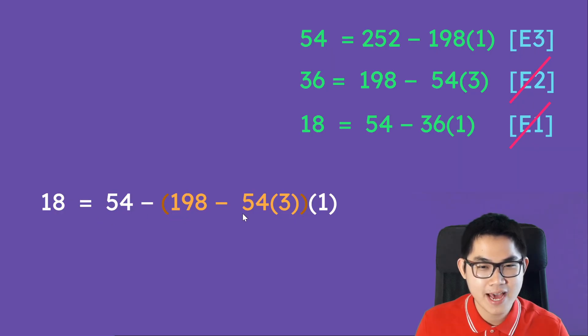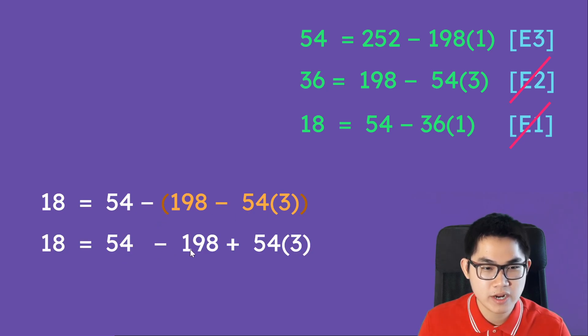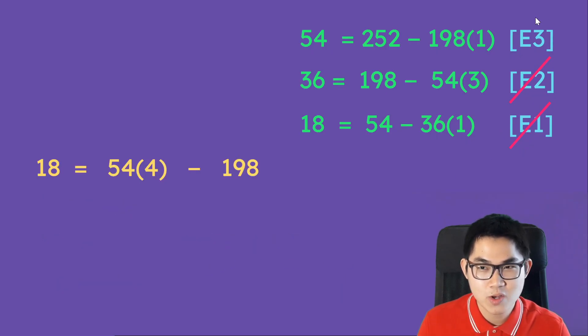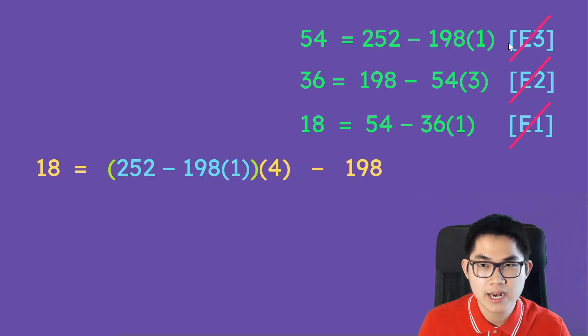Let's simplify this equation. So we have 54 minus 198 minus 54 times 3 times 1. So that's just going to get rid of itself. And then this becomes 54 minus 198 plus 54 times 3, which becomes 54 times 4 minus 198. And now we're going to look at equation 3, and we have 54. So we replace 54 with 252 minus 198 times 1, and then get rid of equation 3.